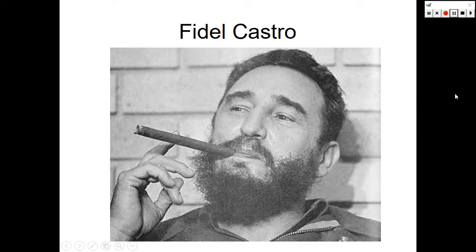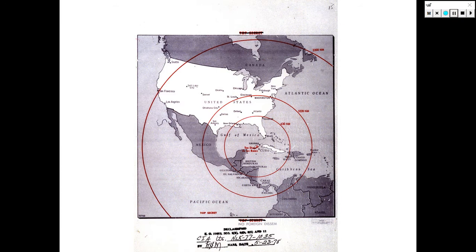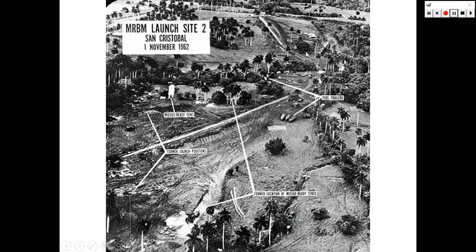Here we have communist dictator and leader of the communist revolution, Fidel Castro. This is a top secret document that has been declassified, showing the location of missile silos outside of Havana and their ability to strike every major American city, with the exception of Seattle and cities in Alaska and Hawaii. This is imagery taken by the U-2 spy plane of the launch sites and silos outside of Havana, Cuba.